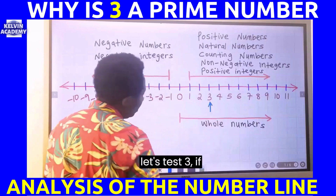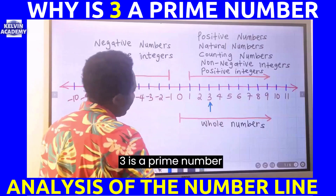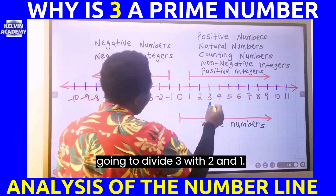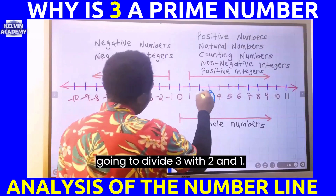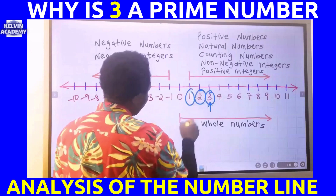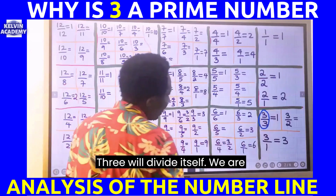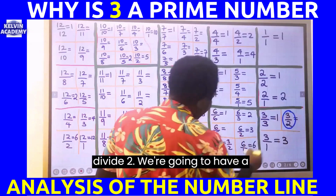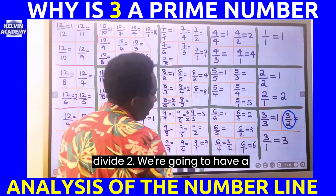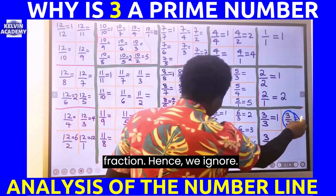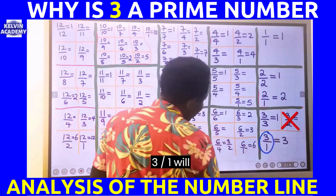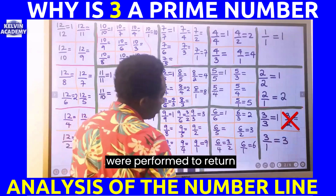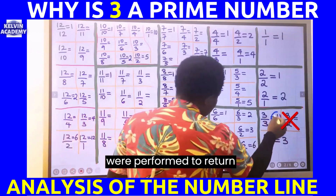Let's test if three is a prime number or a composite number. We're going to divide three by itself — three divided by three will return one. Three divided by two gives a fraction, so we ignore it. Three divided by one will return an integer.